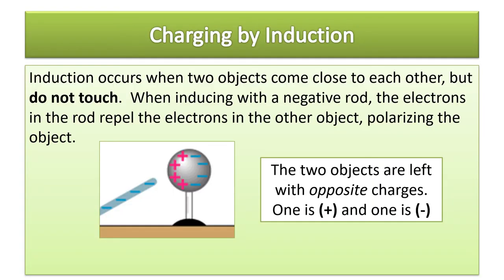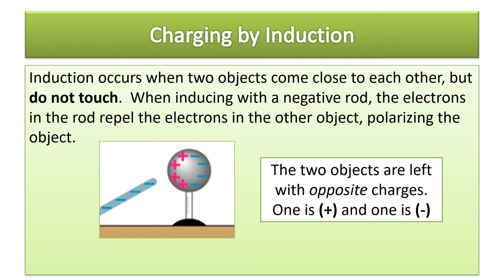Now that we understand grounding, we can talk about the last way to charge something: charging by induction. Induction occurs when two objects come close to each other but don't touch — this is not charging by contact. When inducing with a negative rod, the electrons in the rod repel the electrons in the other object, polarizing it. Polarize means there are two poles — a positive side and a negative side.